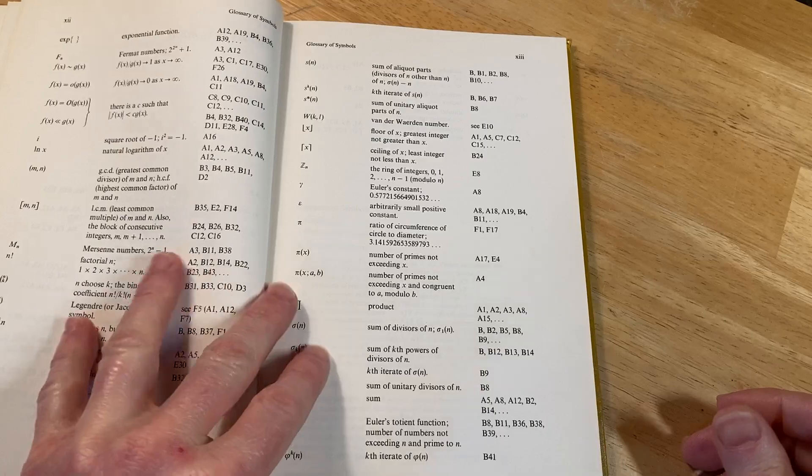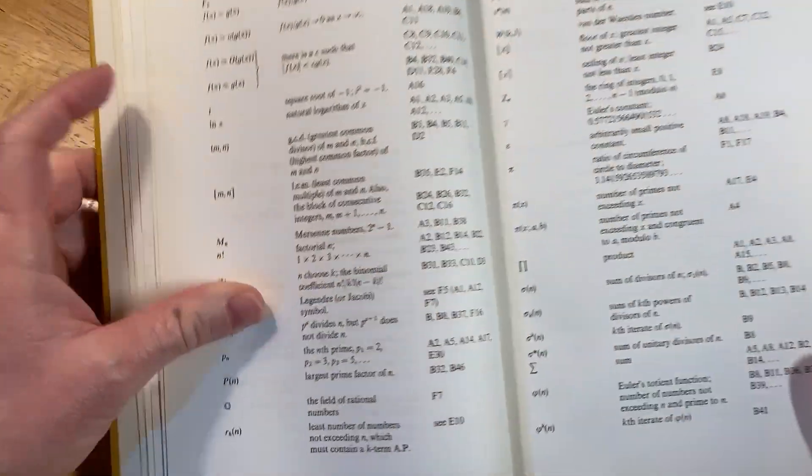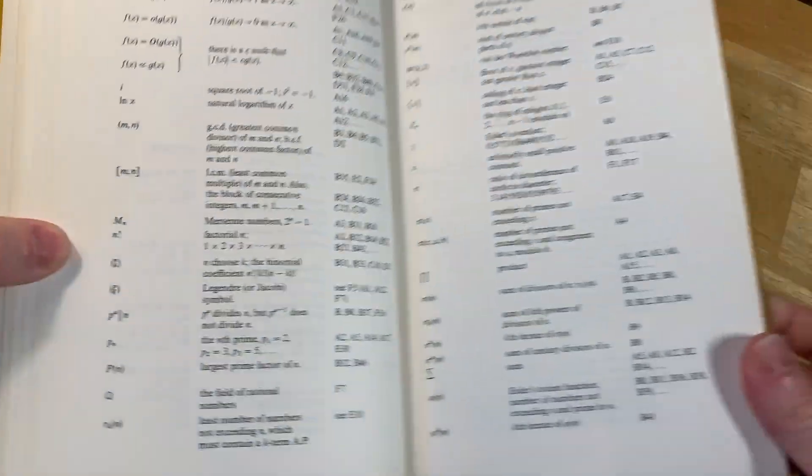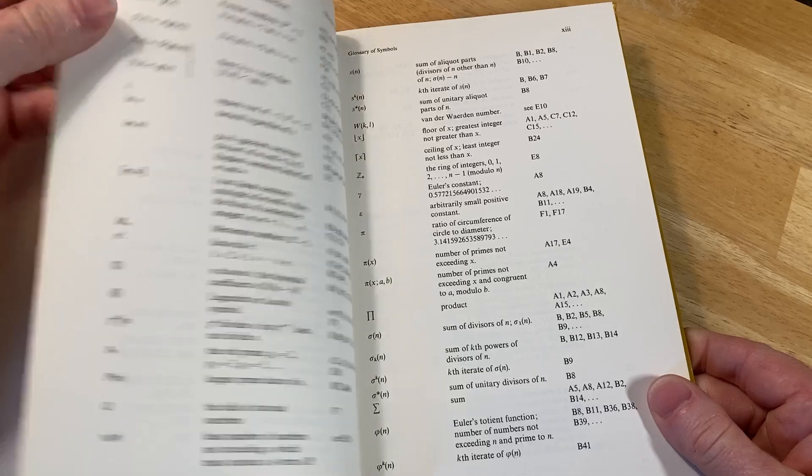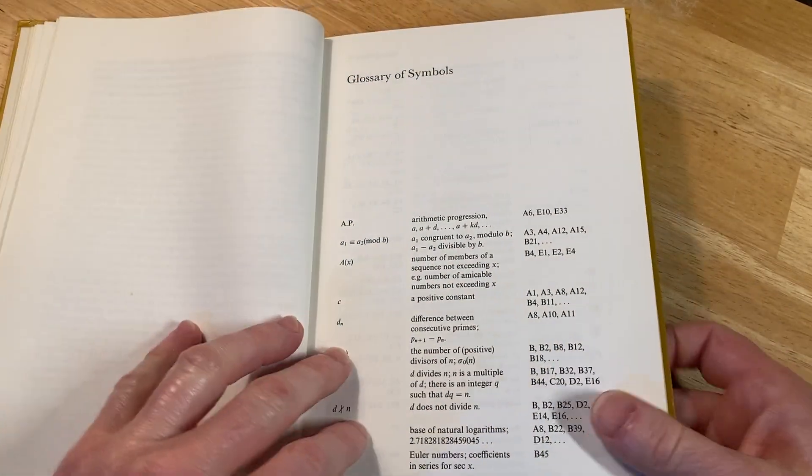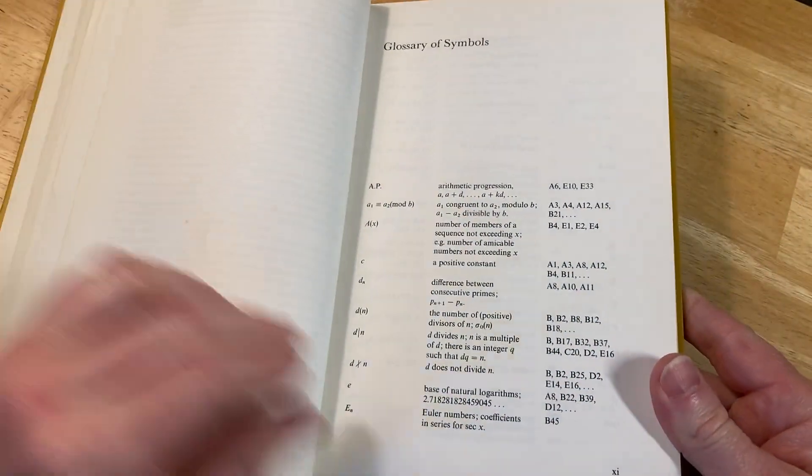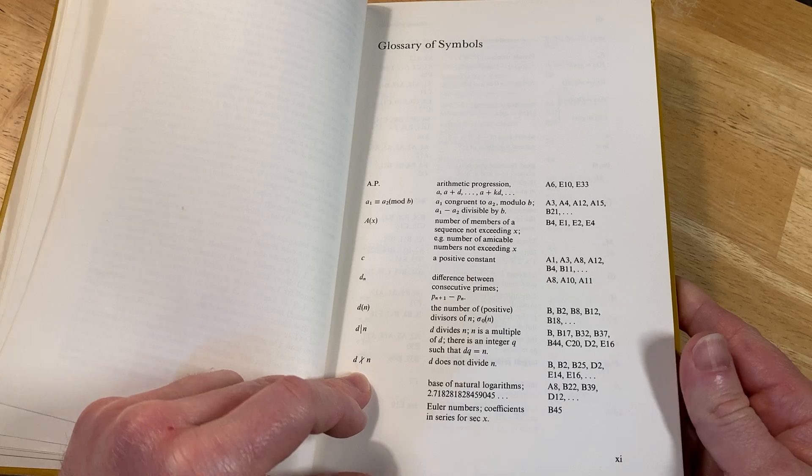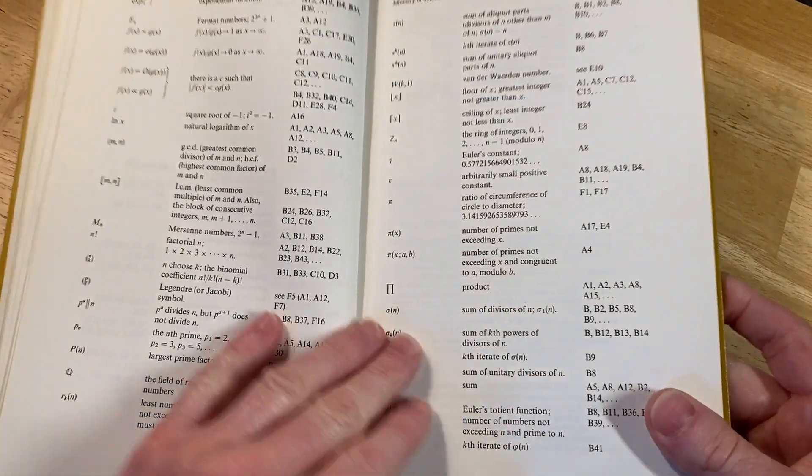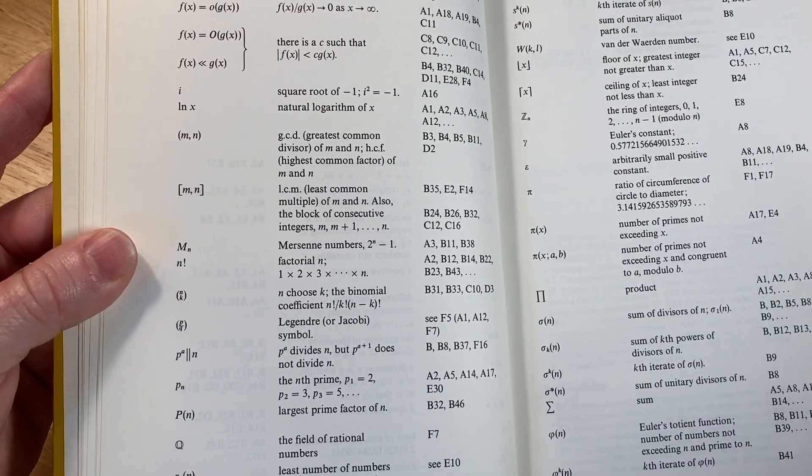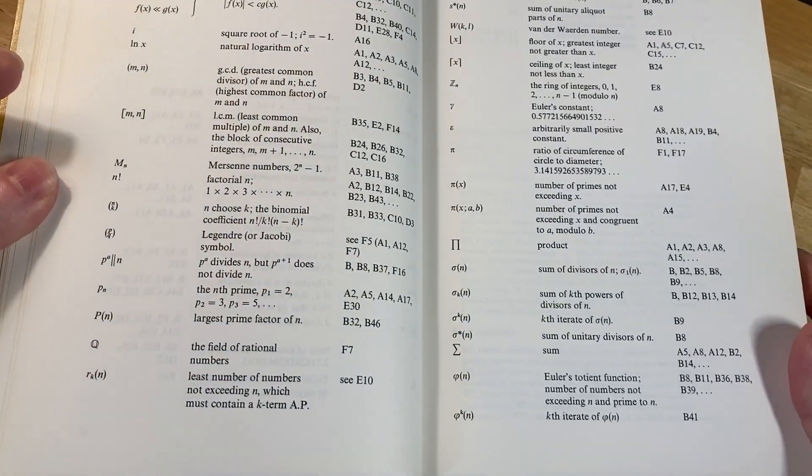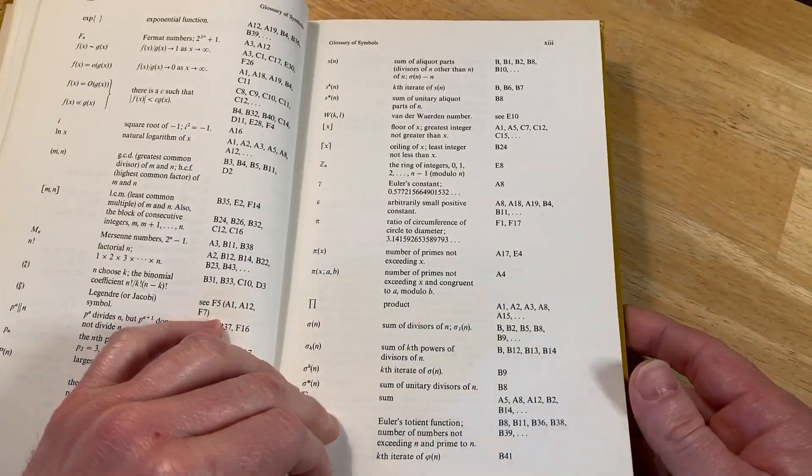Pretty interesting stuff. You've got all kinds of symbols here. There's just a lot of notation here. And that goes to show there's a lot of stuff here. So, divisibility. Just a lot of things. GCD, LCM, Mersenne numbers. Just a lot of notation.